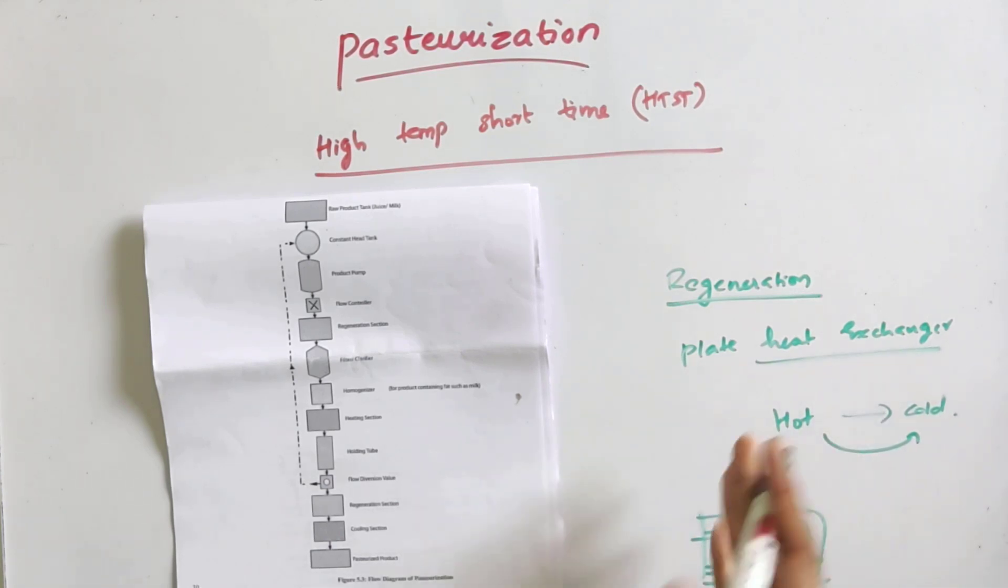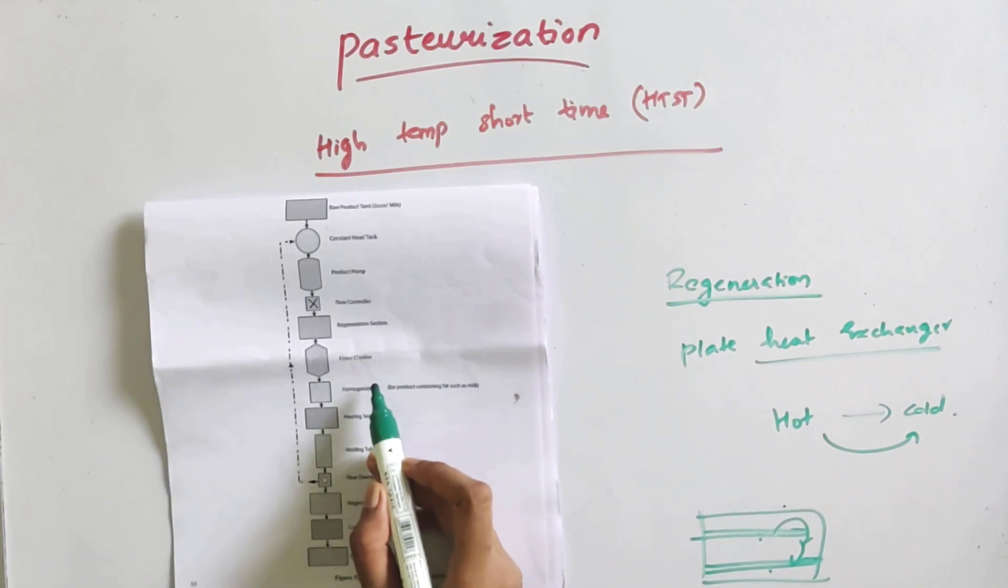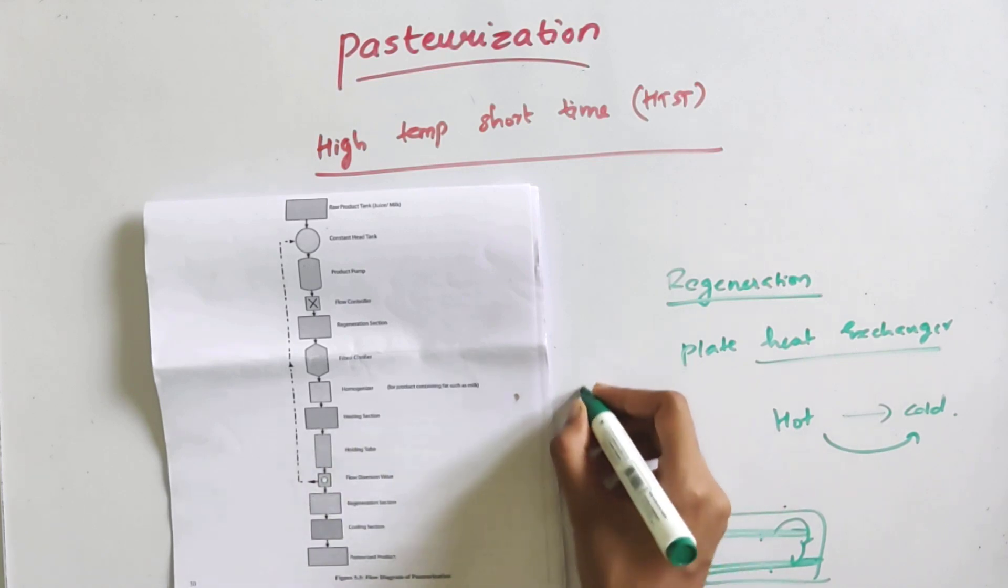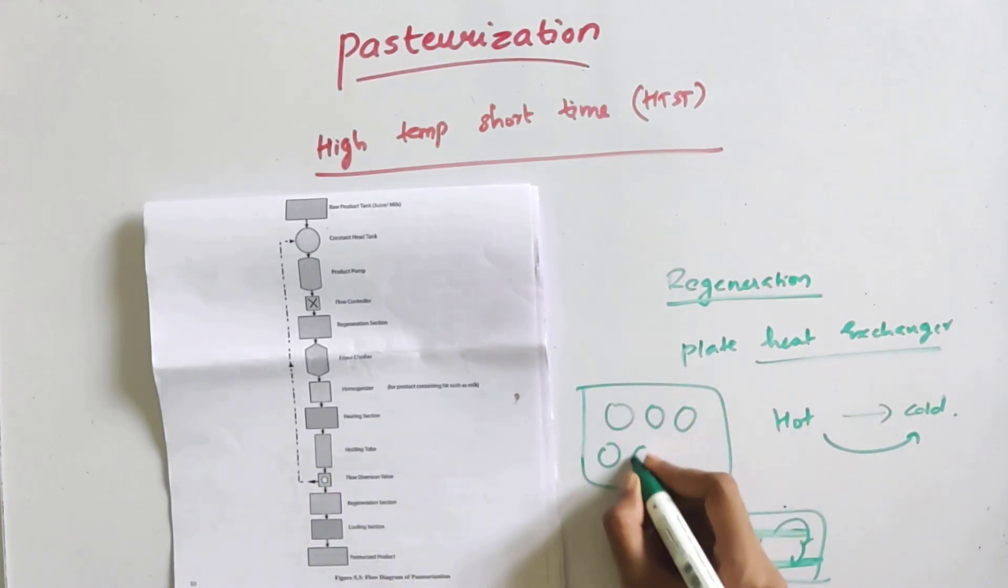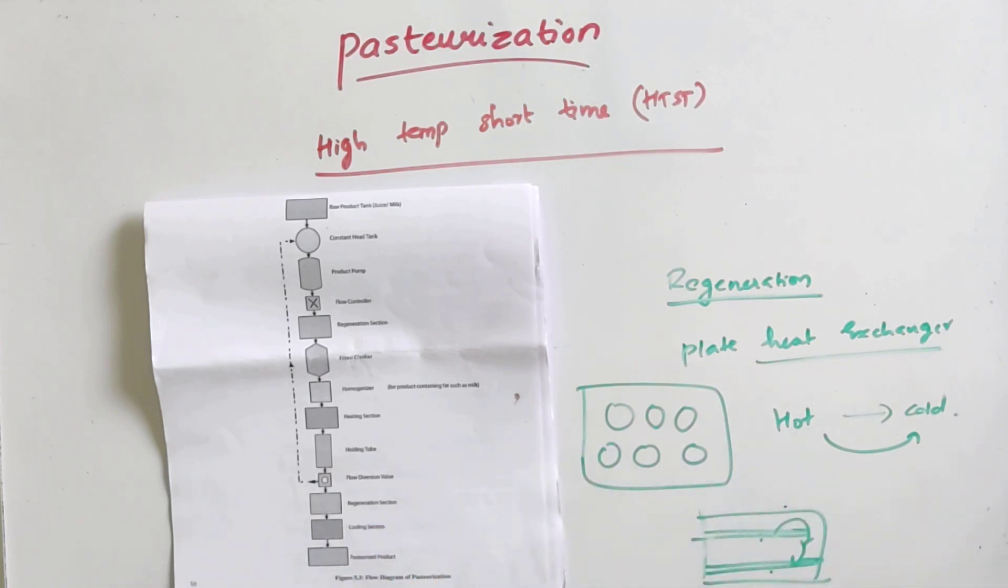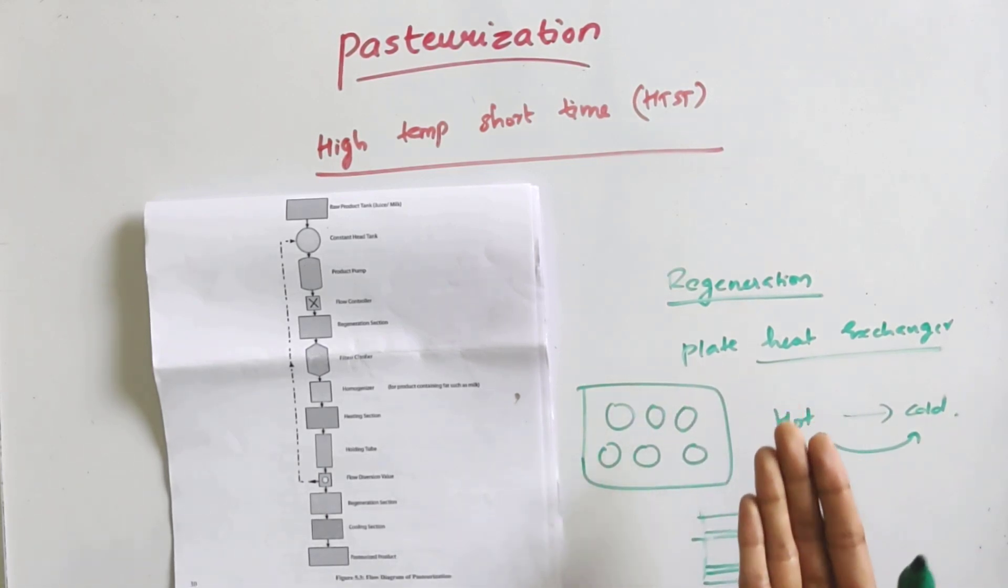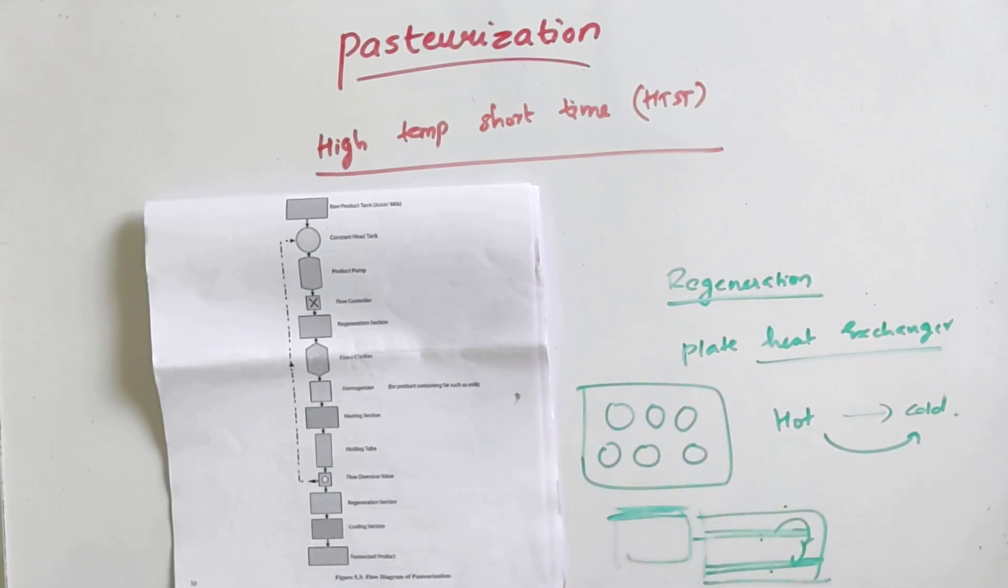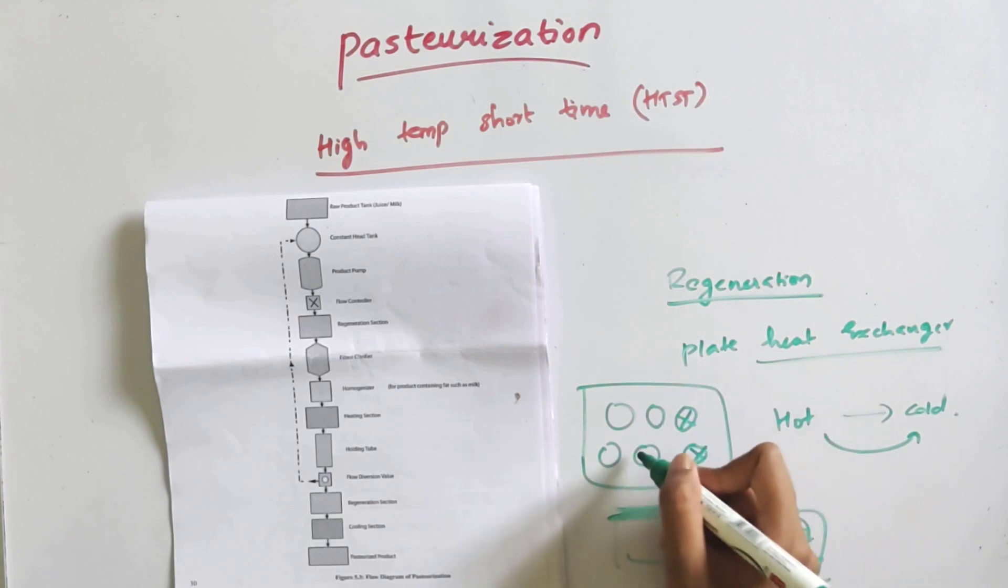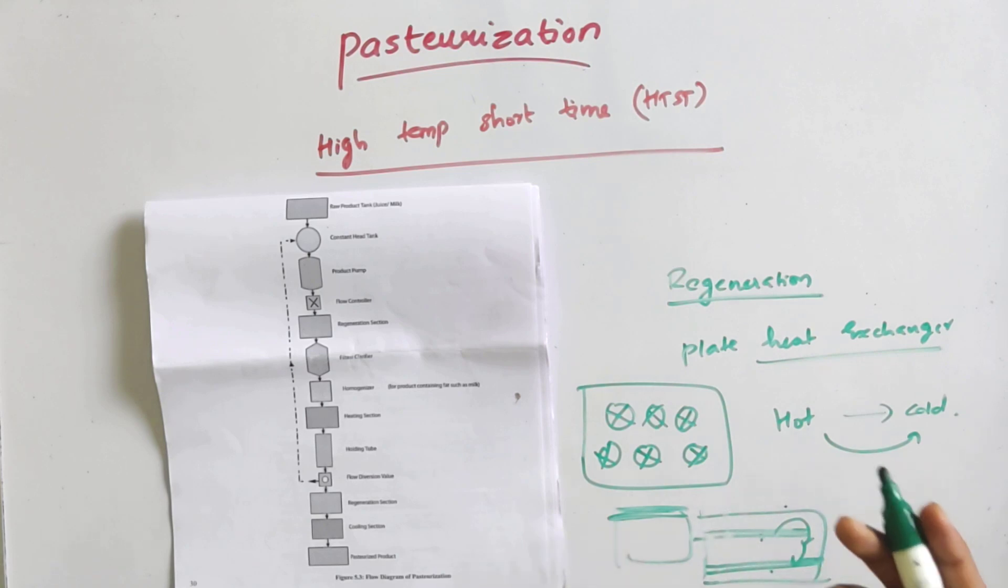Now we have a filter or a clarifier for the product. This is a homogenizer. We have fat globules. If we have fat globules, they will accumulate. We prevent fat globules from accumulation using the homogenizer.